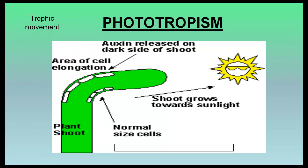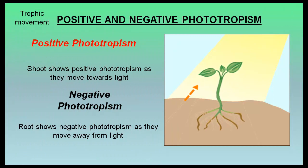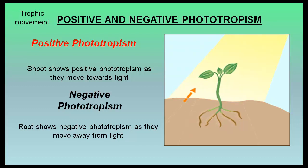Phototropism is a directional growth movement of curvature which occurs in response to unidirectional exposure to light. Phototropic movement is generally caused by increased auxin on the dark side and lesser auxin on the illuminated side, causing more growth on the dark side of the stem and bending it towards the source of light. Shoots show positive phototropism as they move towards light, and roots show negative phototropism as they move away from light.